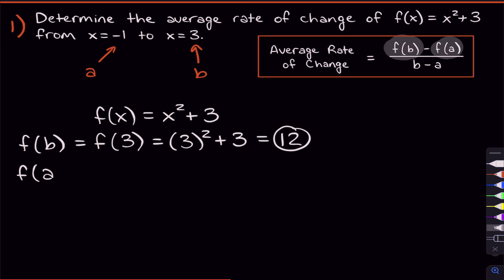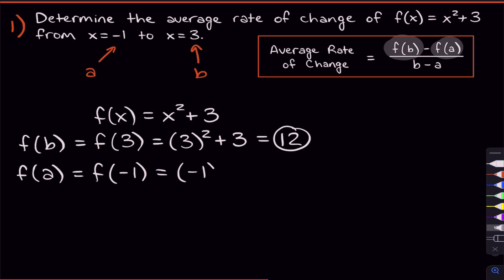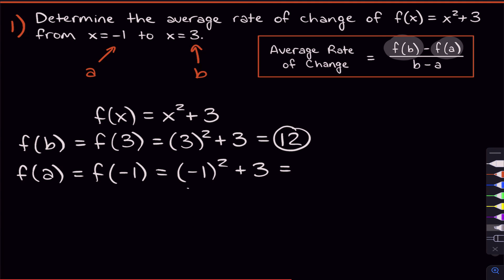What about f(a)? a is negative one, so we rewrite this as f(negative one) — just plug in negative one for a. We plug negative one everywhere we see an x in x squared plus three, giving us negative one squared plus three. Negative one squared is negative one times negative one, which is positive one. So we get one plus three, and that's four.